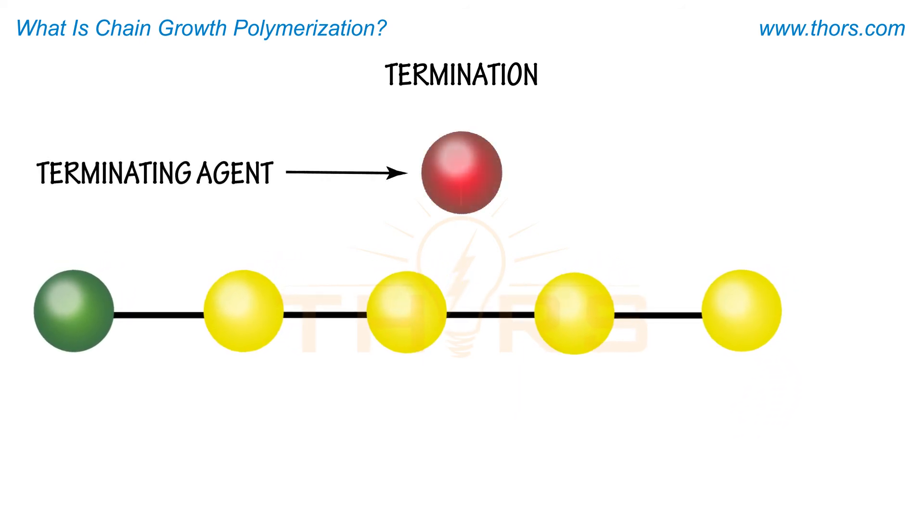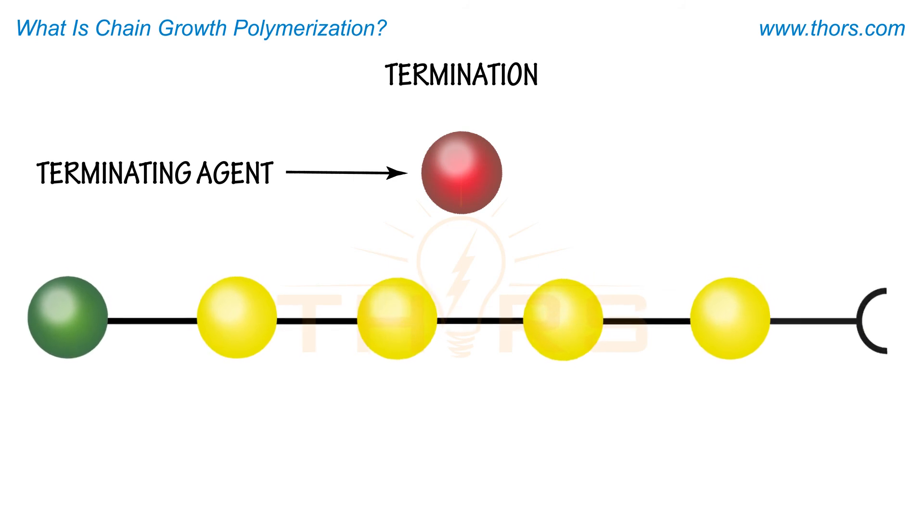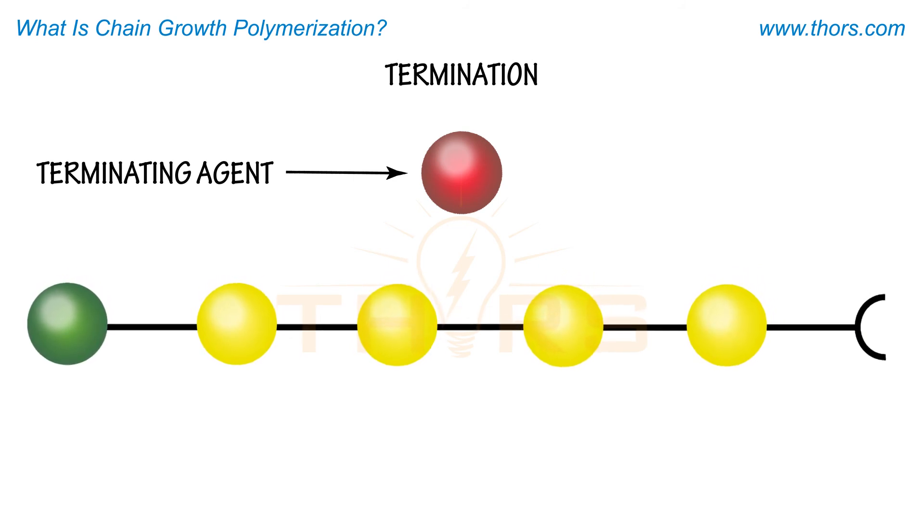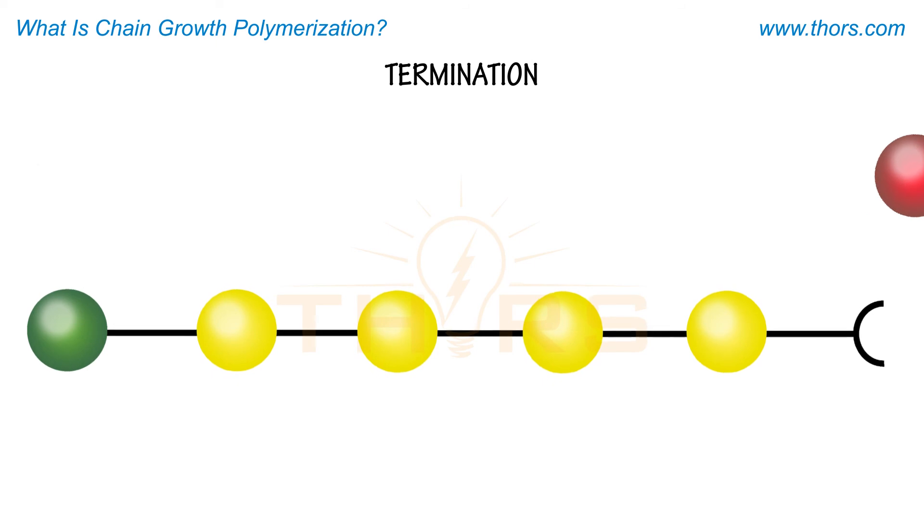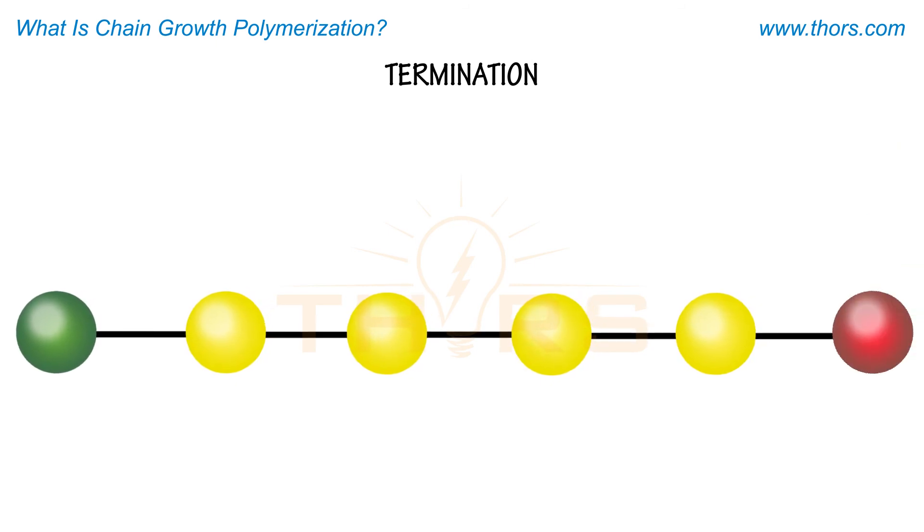During this final stage, a terminating agent is added to the reactor that will react with the ends of the growing polymer chains. The ends of the chains are now terminated, stopping any additional growth of the chain.